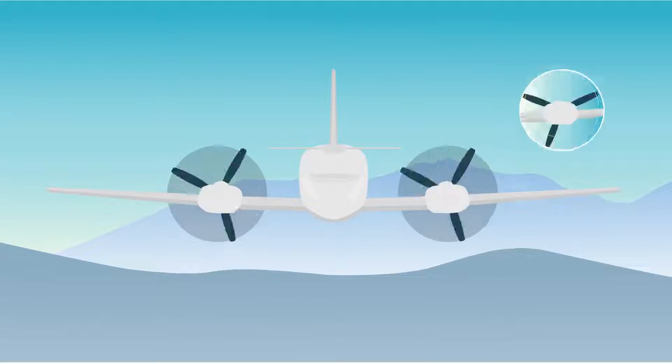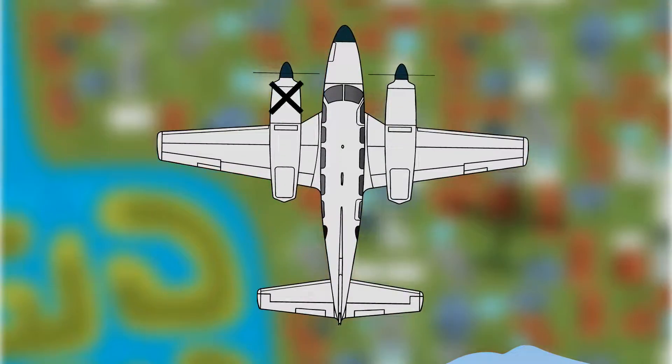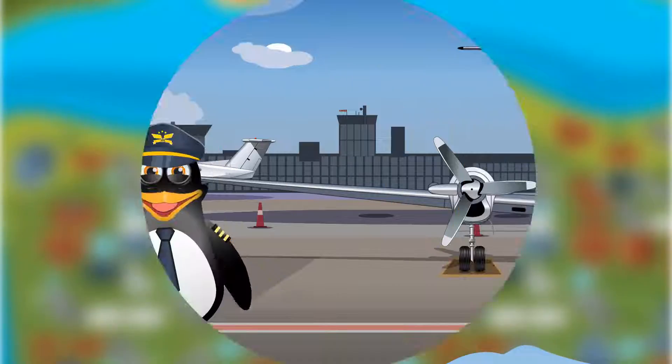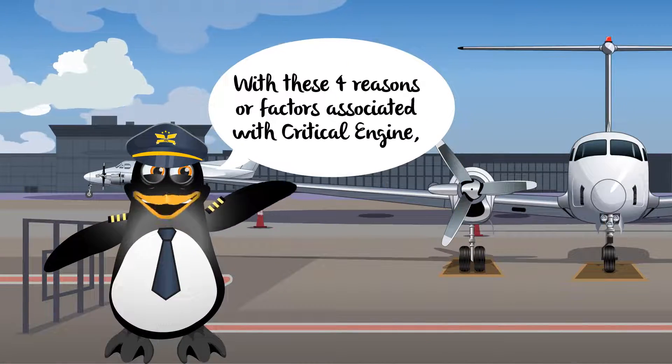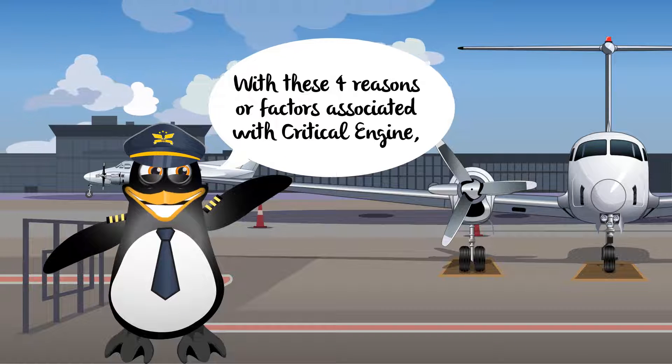All of which contribute to making the critical left engine the one which most adversely affects control of the airplane when it becomes inoperative. If you are not familiar with these four reasons or factors associated with critical engine, we will discuss them in this video.